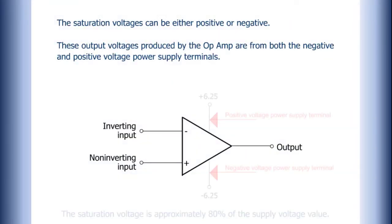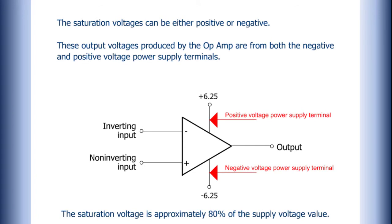The saturation voltages can be either positive or negative. These output voltages produced by the Op Amp are from both the negative and positive voltage power supply terminals. The saturation voltage is approximately 80% of the supply voltage value.